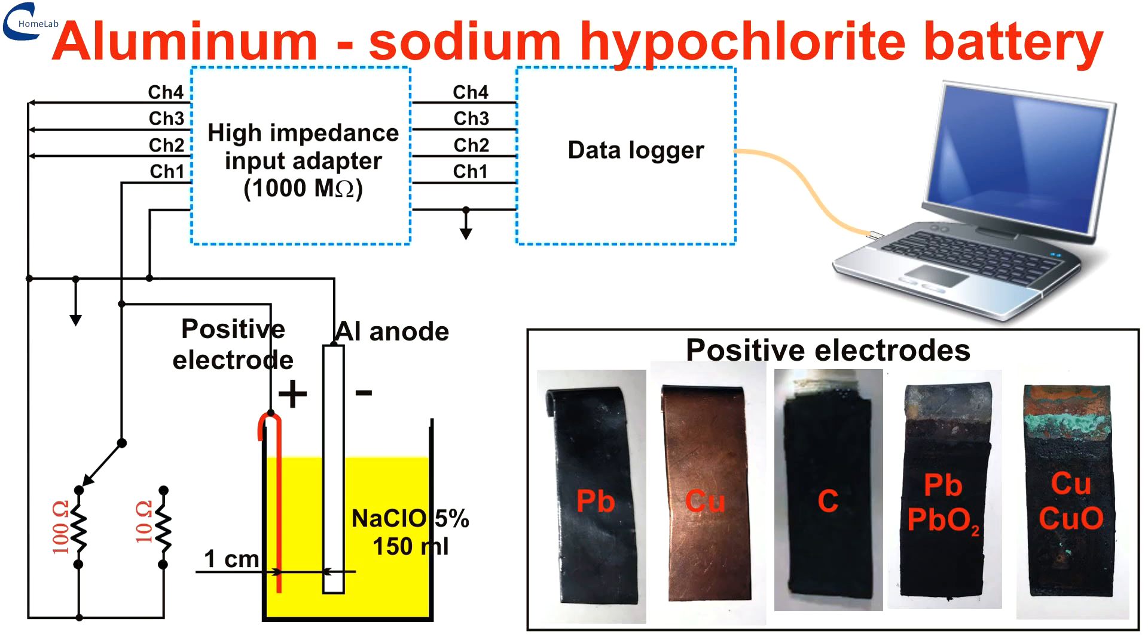These chemical reactions use sodium or potassium hydroxide as electrolyte and lead to consumption of the aluminum electrode even when the battery is at rest.